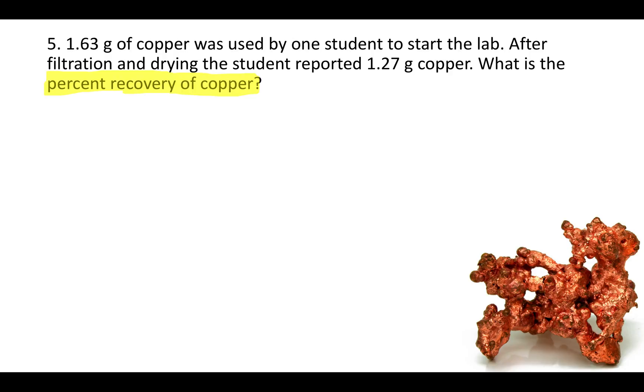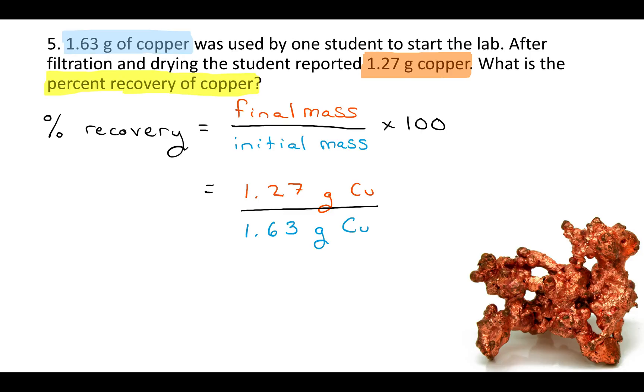So they're asking about the percent recovery of copper. Percent recovery is going to be the final mass that you recovered over the initial mass that you started with times 100. So the final mass that you recovered here, they're giving you 1.27 grams. The initial mass that the student started with was 1.63 grams. So we take those, multiply it by 100, and in this case you would get 77.9% recovery.